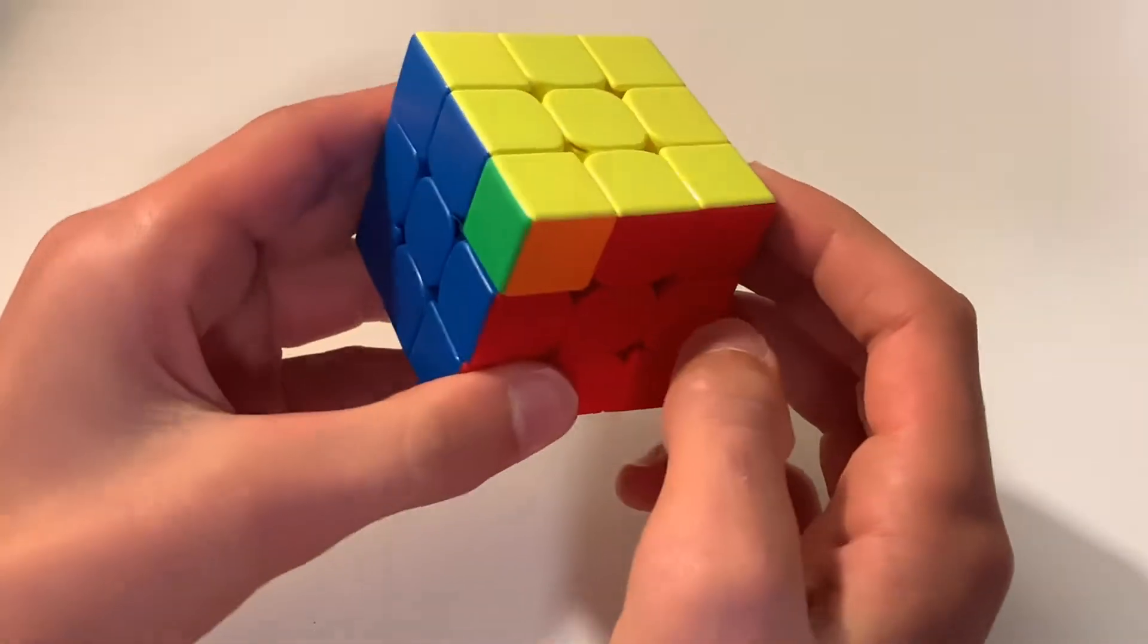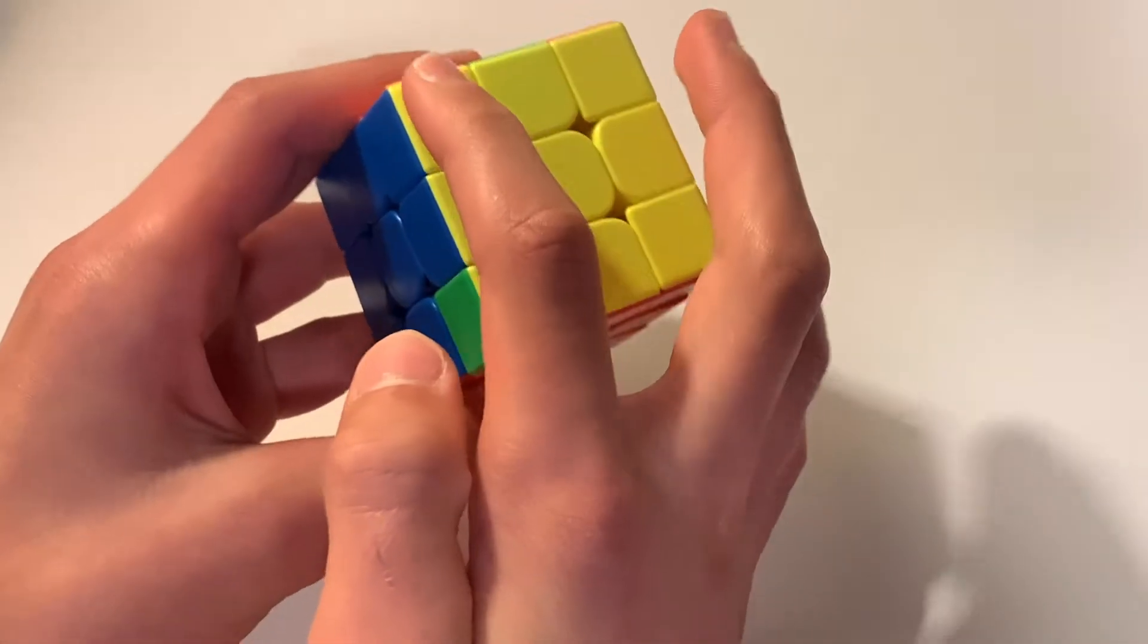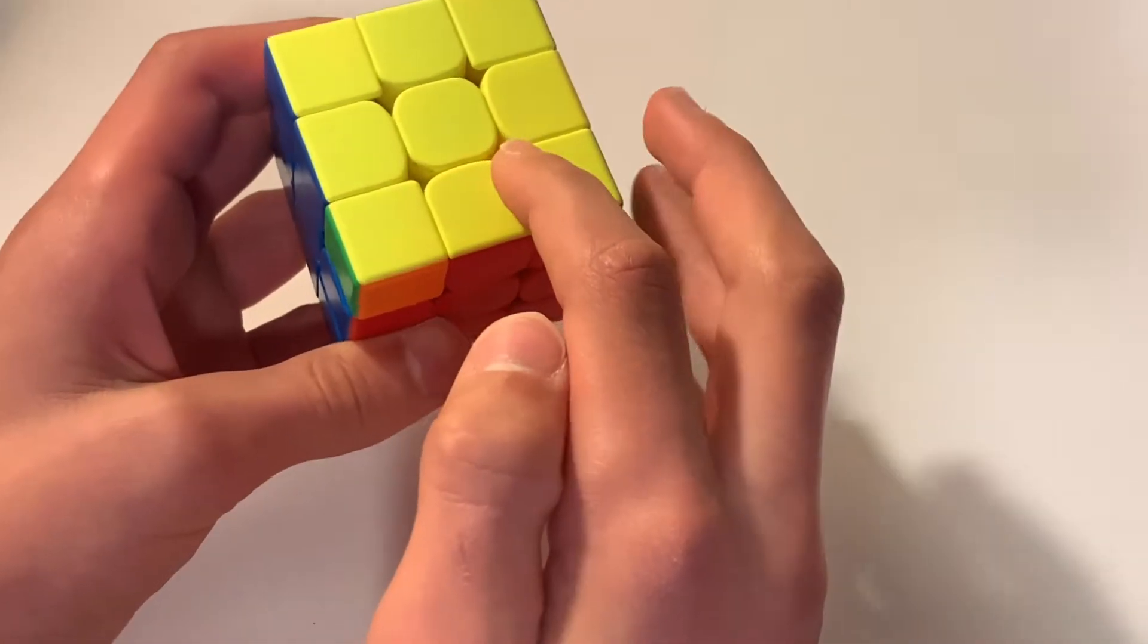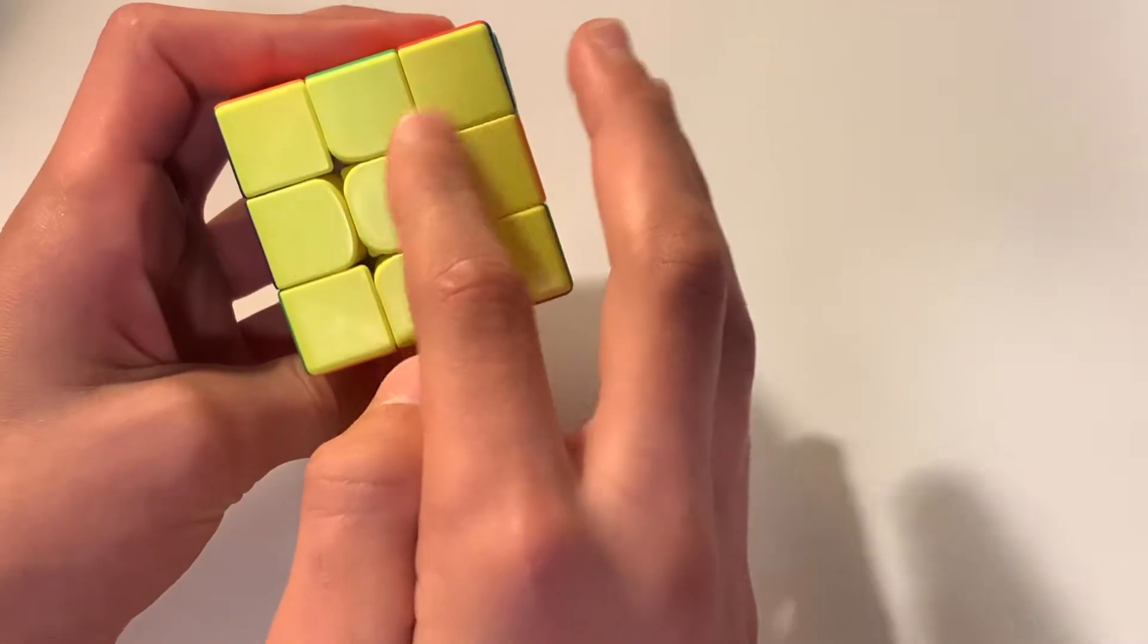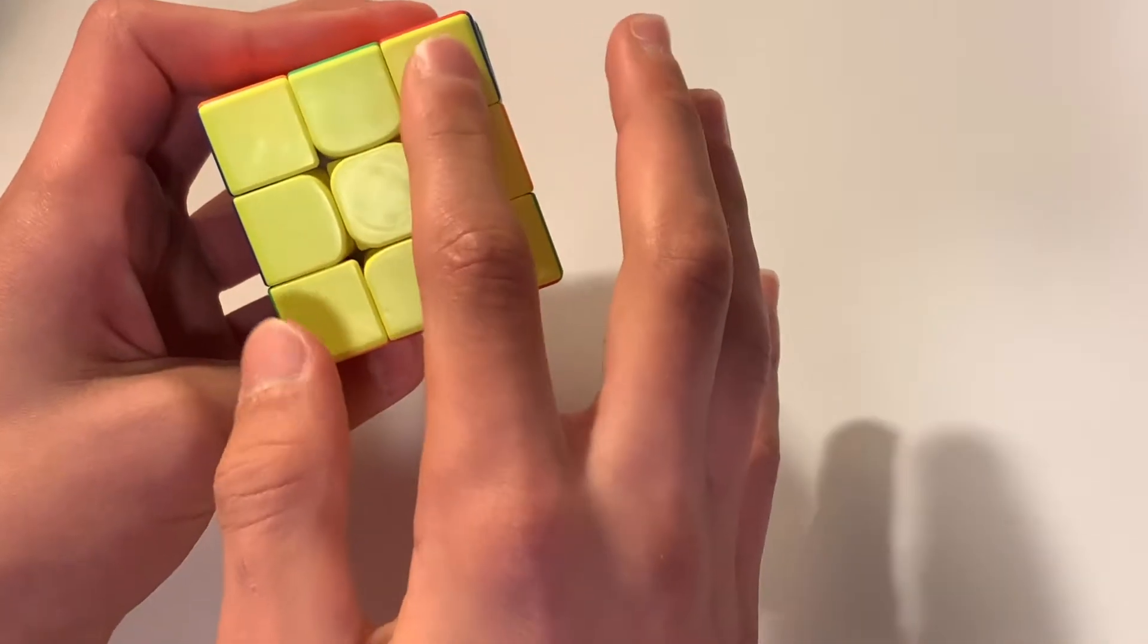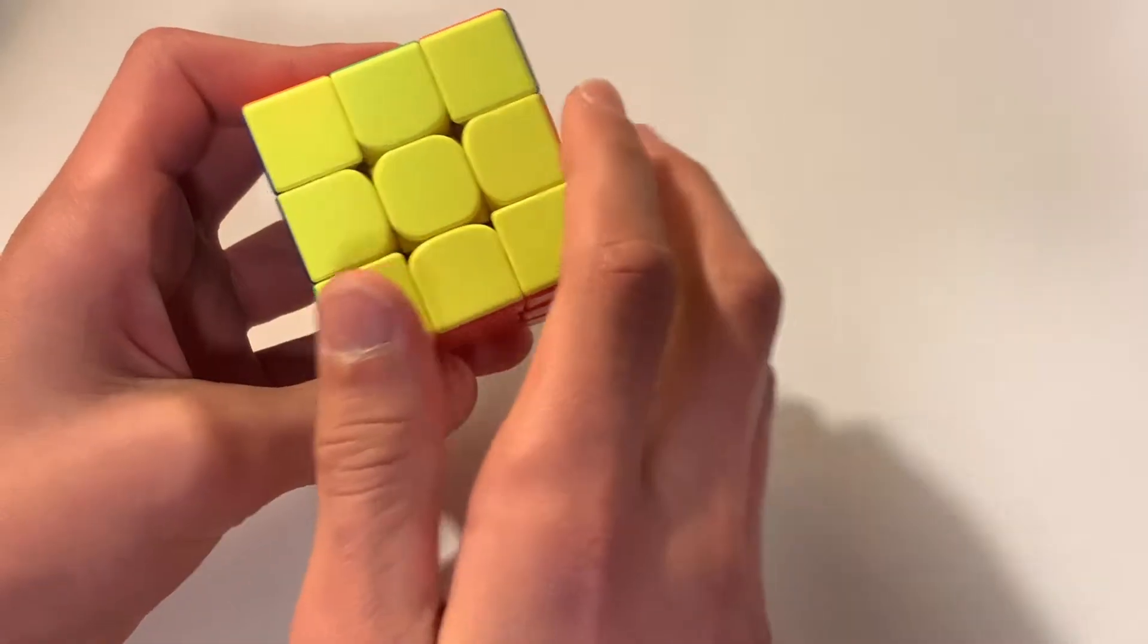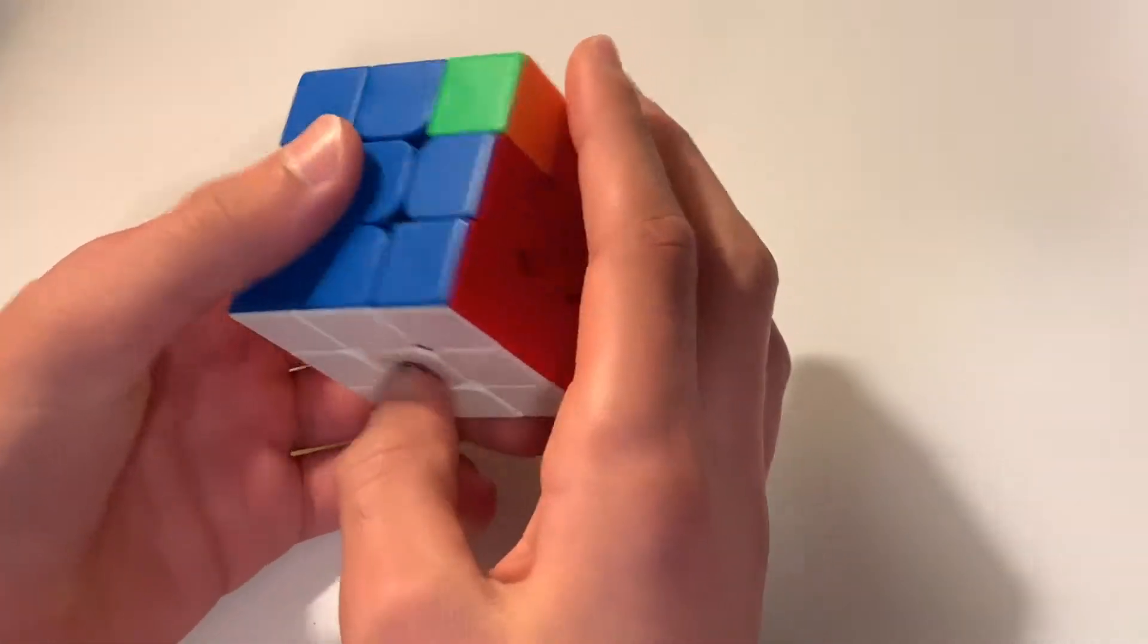So the Y perm looks like this, where there are these two bars right here and right here. And then these two edges need to be swapped and so do these two corners, so it looks like the shape of a Y, which is why it's called the Y perm, obviously.